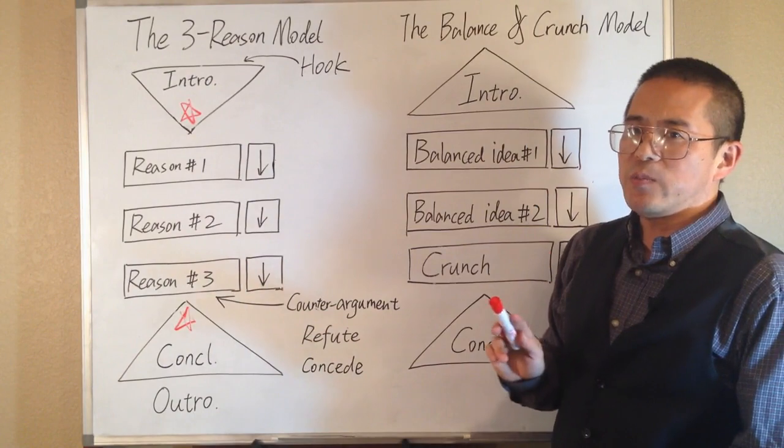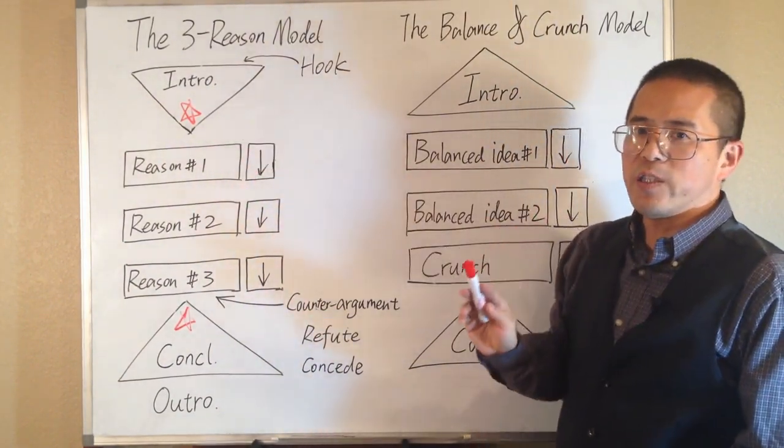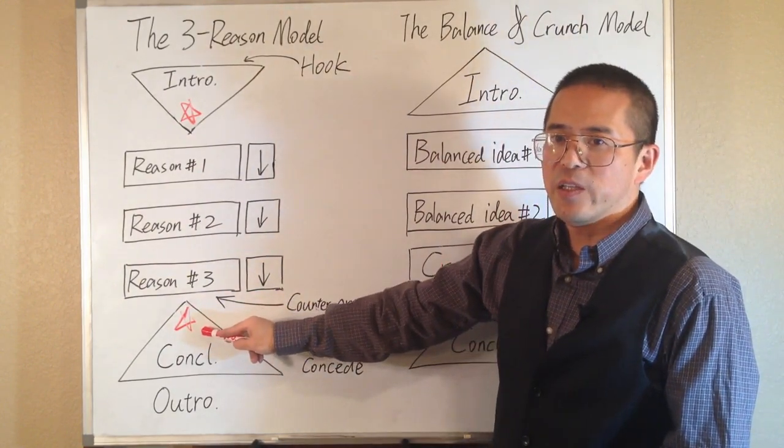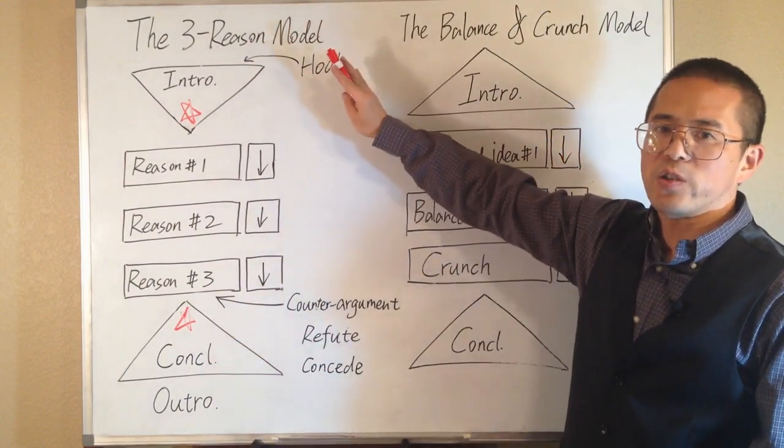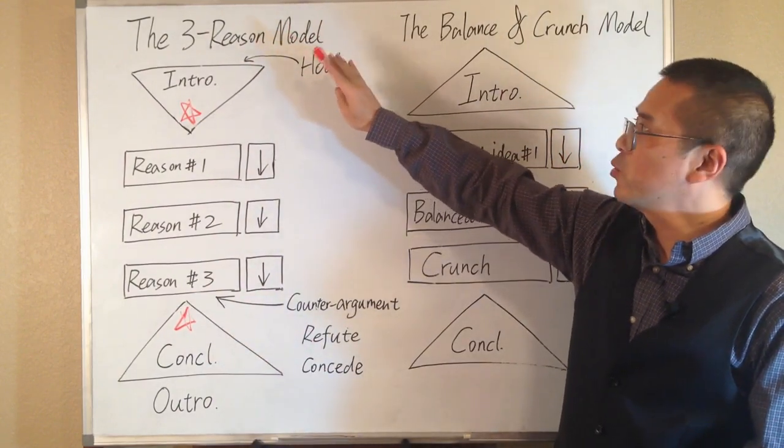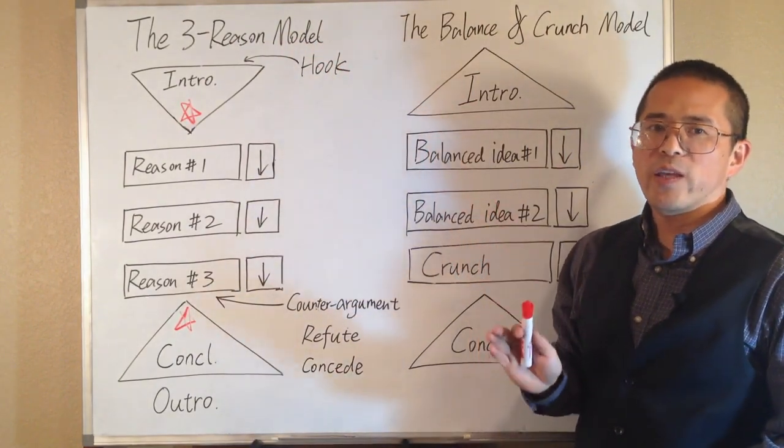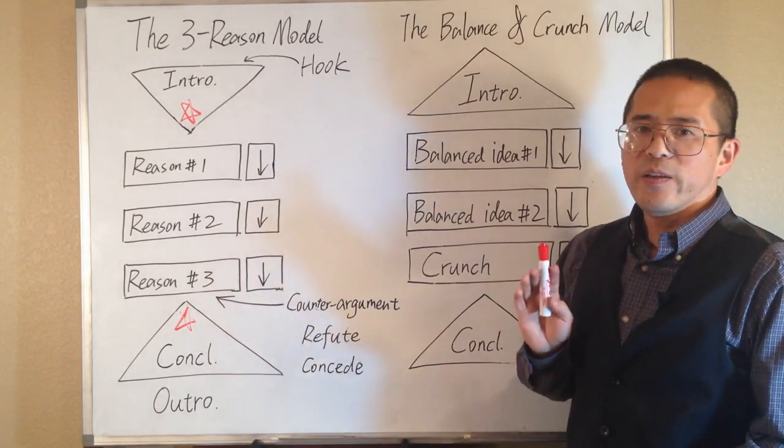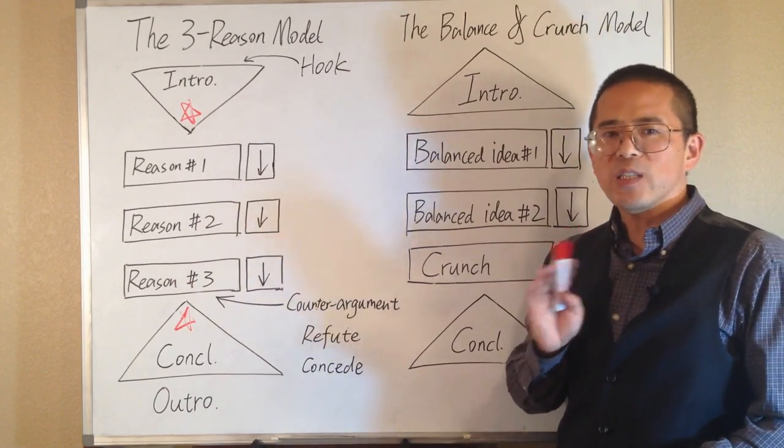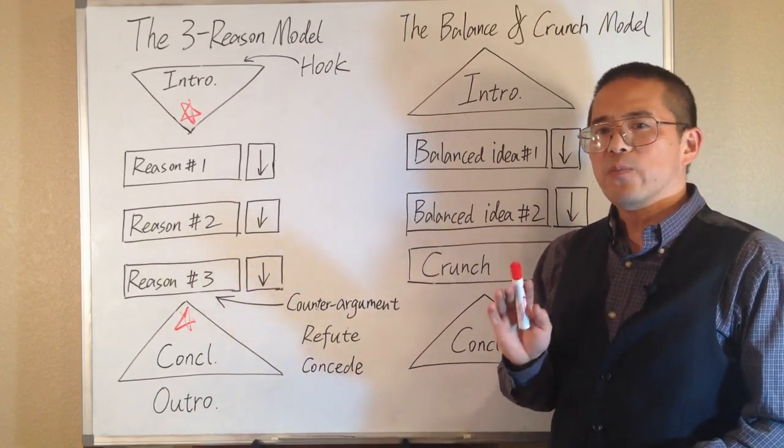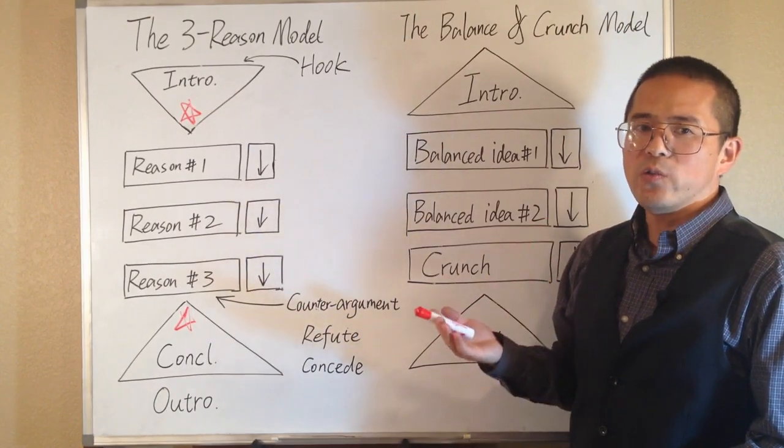We have thesis statement at the end of the introduction. And we have paraphrasing of the thesis statement at the beginning of conclusion. These are the basic structure and basic elements for the 3 reason model. It is an effective writing model to train our thinking. And it could be helpful in standard writing tests. But for complex topics, we may want to add more elements and variations.